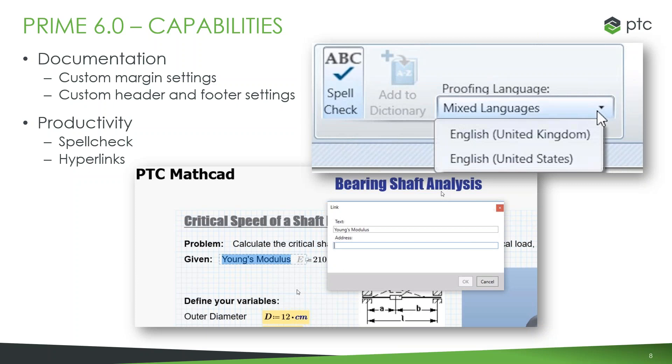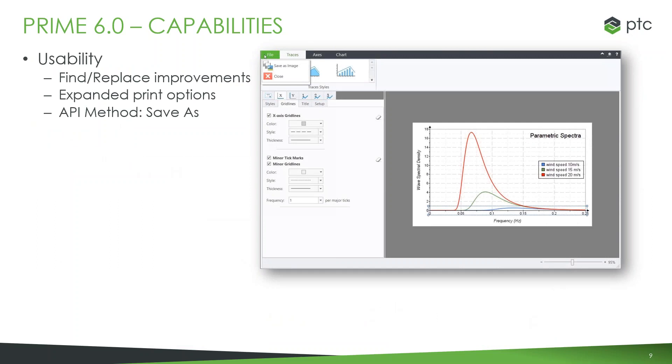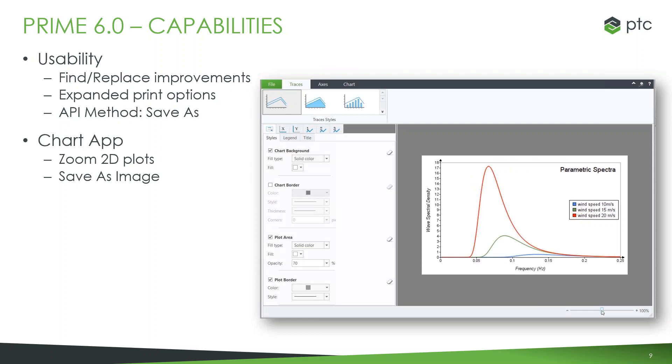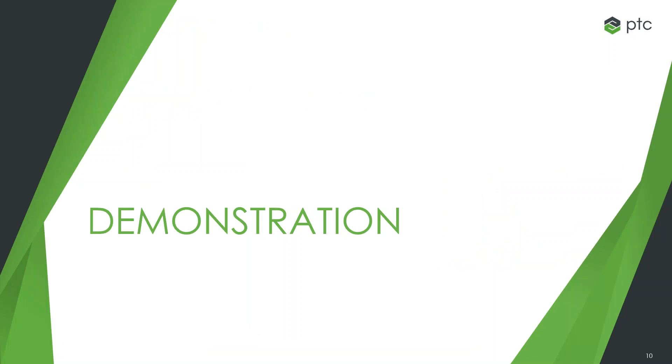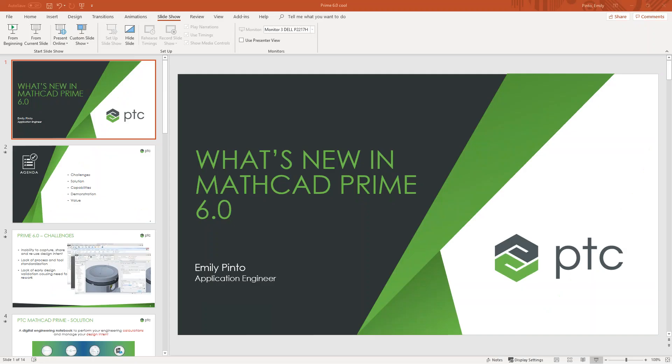We also have more usability. So improving the ability to find and replace elements within our document and expanding the options around printing our documents off of our calculations, including the API method to save as different file types. Around our chart application, we can now take our plots and zoom to different areas to select what we want the focus to be rather than including any extraneous information. So once we finish our plots, we have the option to save those off as image files.